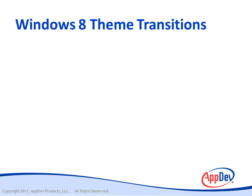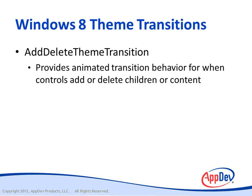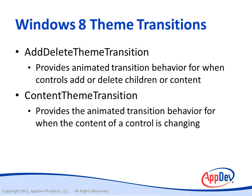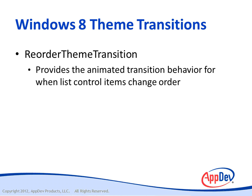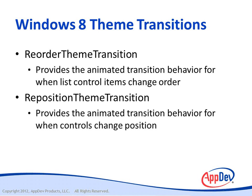Although there are more transitions than these, we'll focus on these five transitions. There's the add-delete theme transition, which provides animated transition behavior for when controls add or delete children or content. There's the content theme transition, which provides a transition behavior for when the content of a control is changing. There's the entrance theme transition, which is used most often, and provides the animated transition behavior for when controls first appear. The reorder theme transition provides transition behavior for when list controls change their order — they animate gracefully into place. And there's the reposition theme transition, which provides the transition behavior for when controls change positions, so they gracefully glide into place.